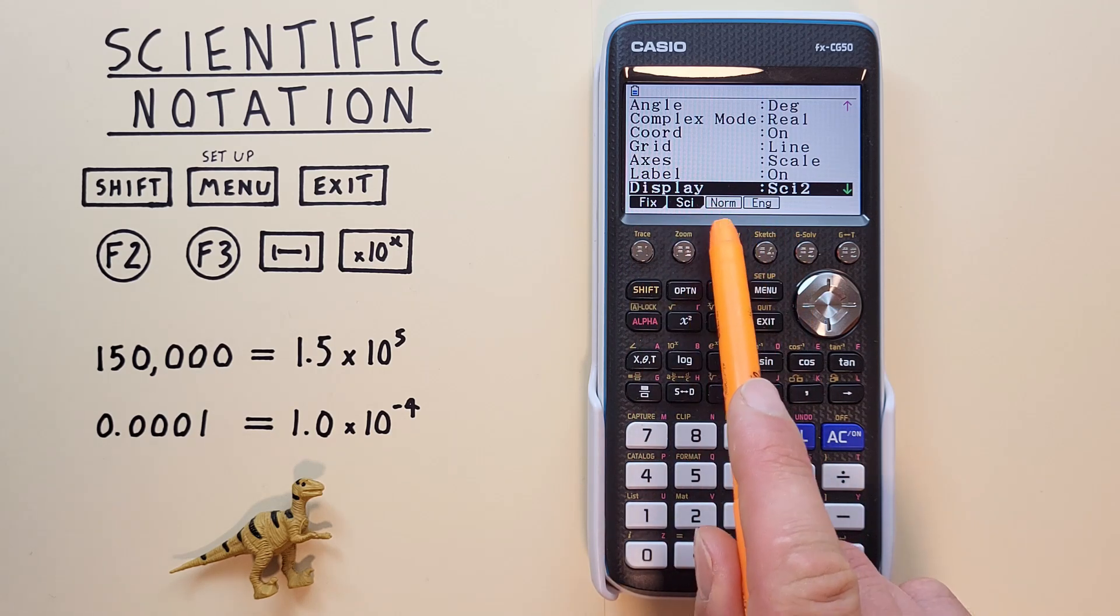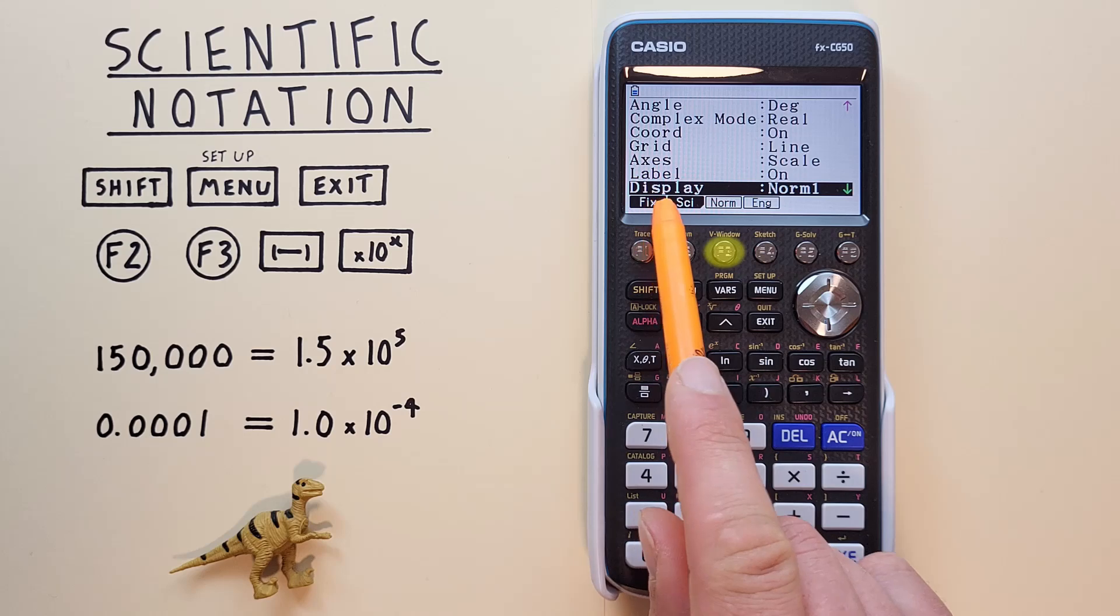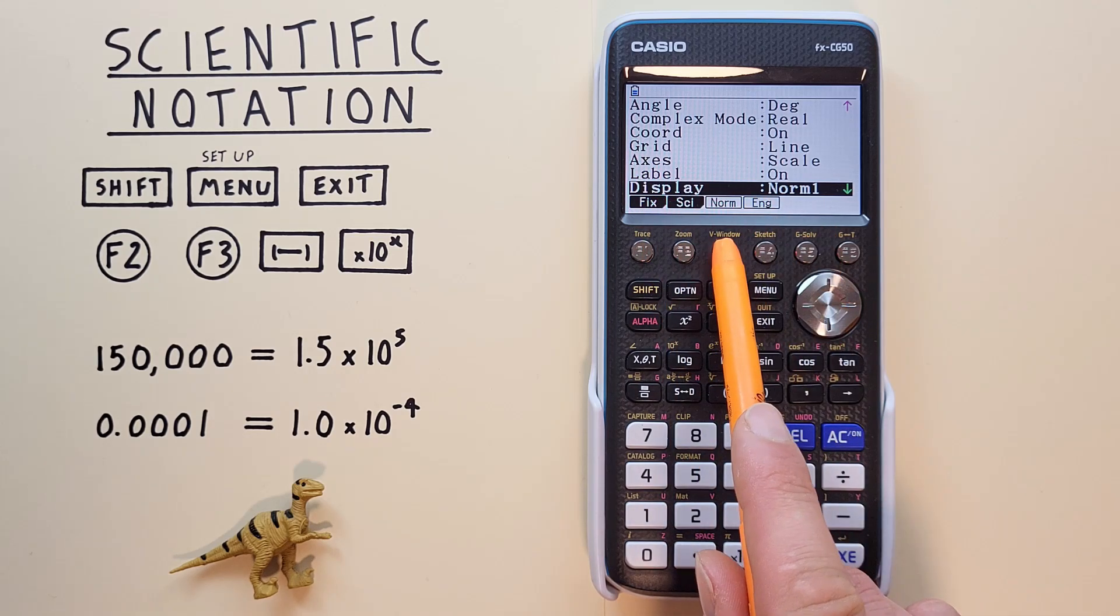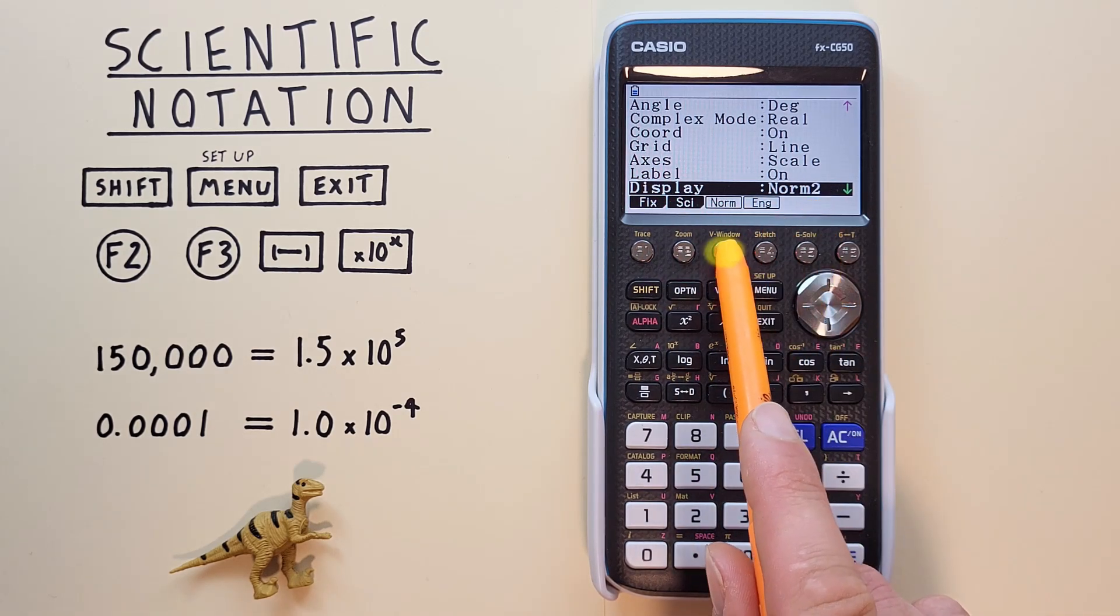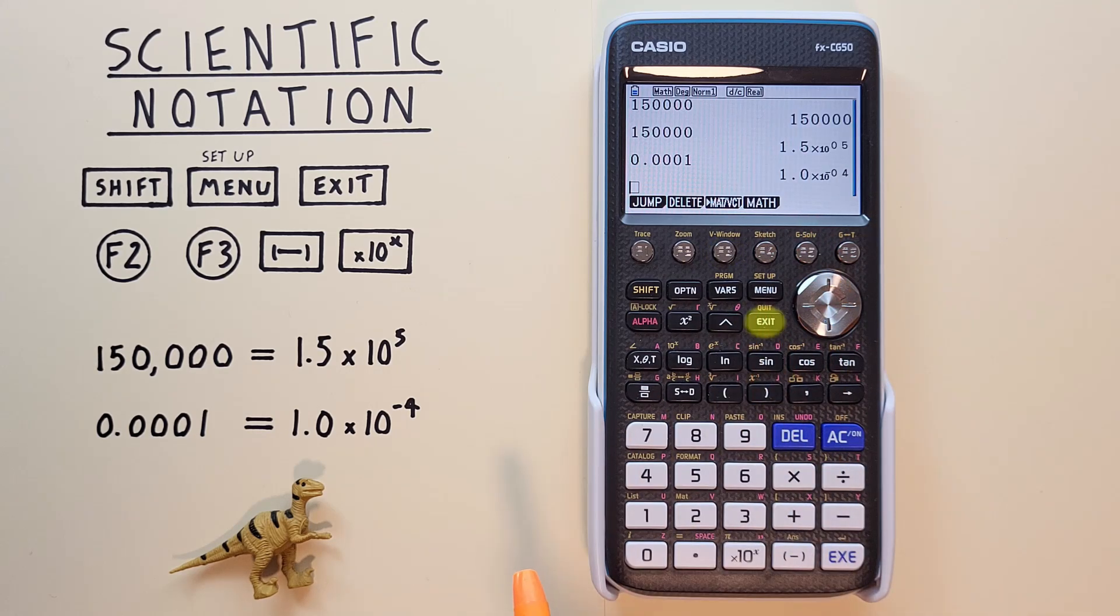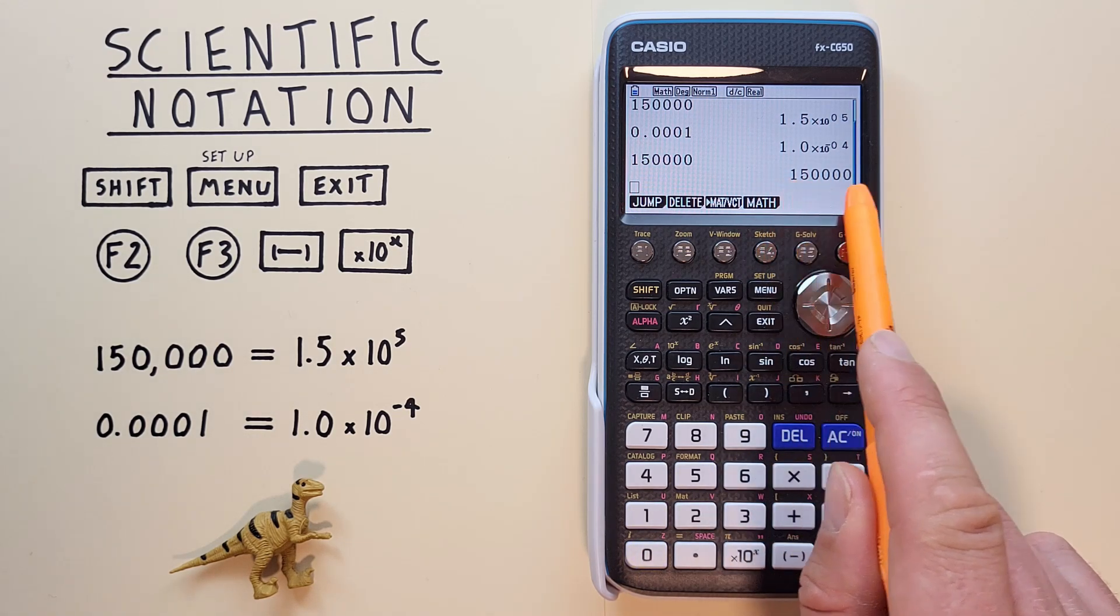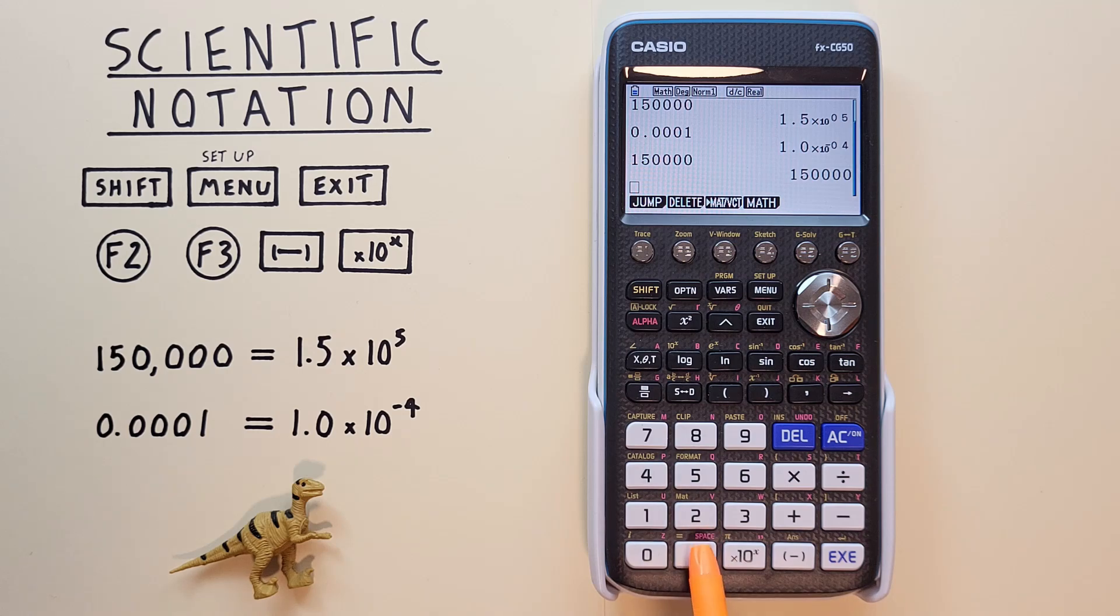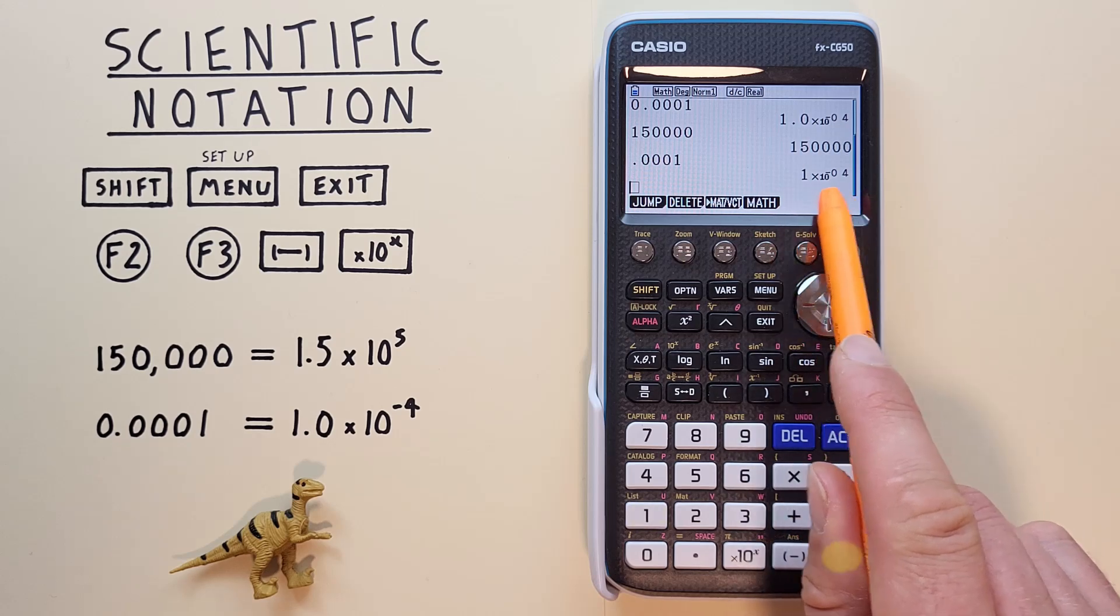We can again choose our display mode. What we were in before was normal mode, and we have the option of choosing normal mode 1 or normal mode 2. If we choose normal mode 1, when we enter our large numbers, they're displayed normally as the digits, but if we enter very small numbers, they're still converted to scientific notation.